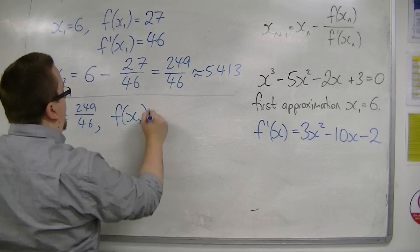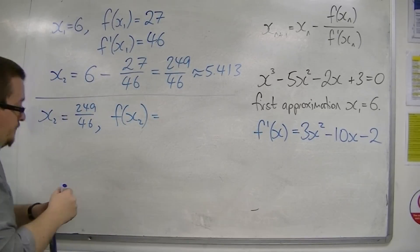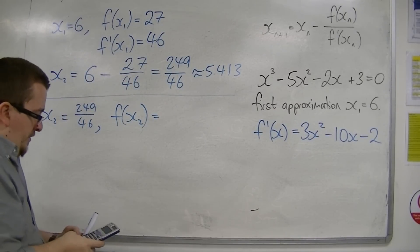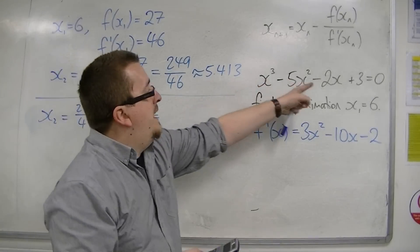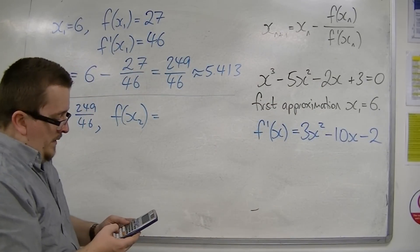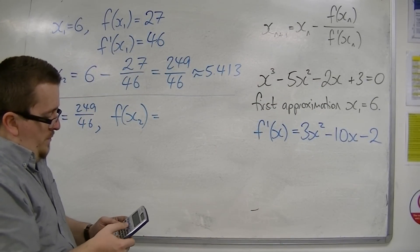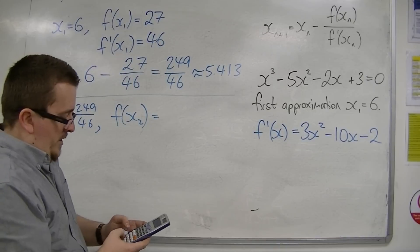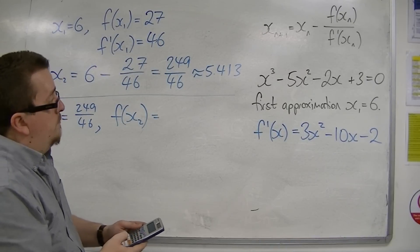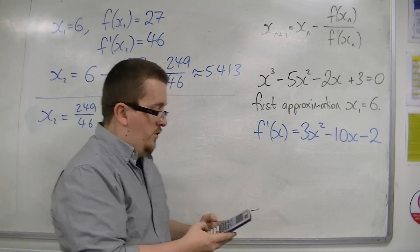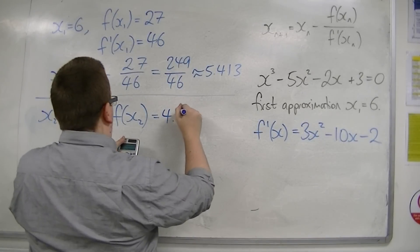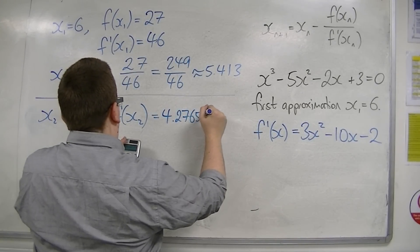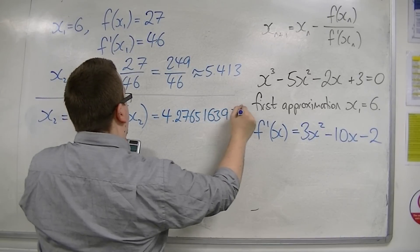So we need to find f of x2. So 249 over 46. And I'm substituting it into this formula first. So I'm going to have the answer cubed, take away 5 times answer squared, take away 2 times answer plus 3. And that gets me 4.276516397.